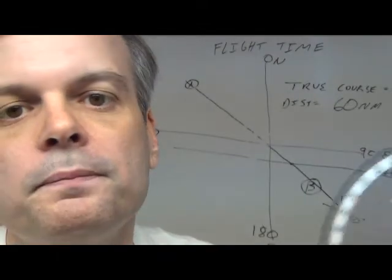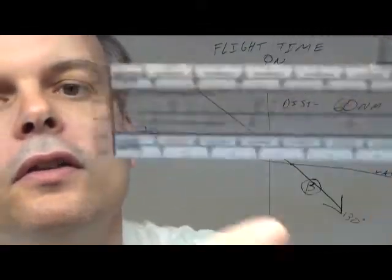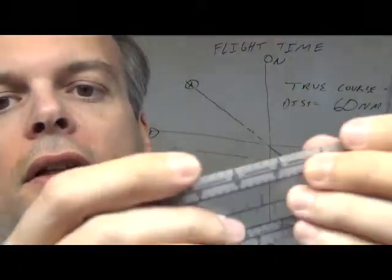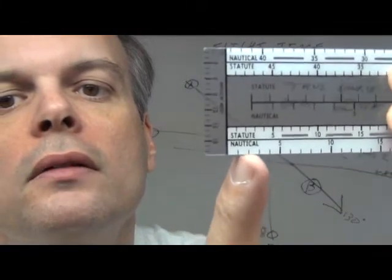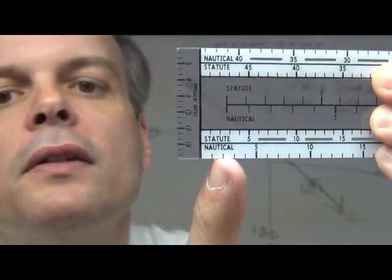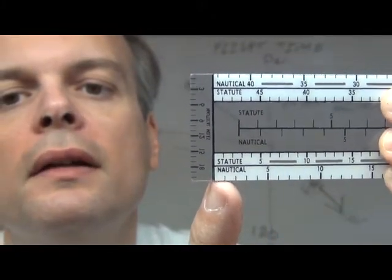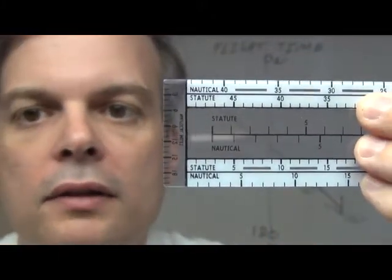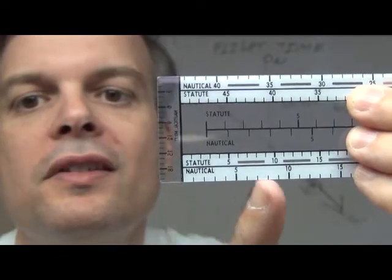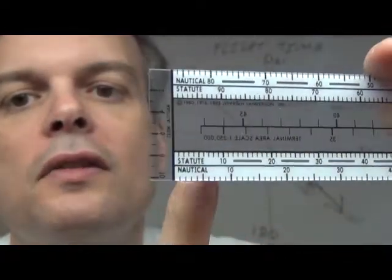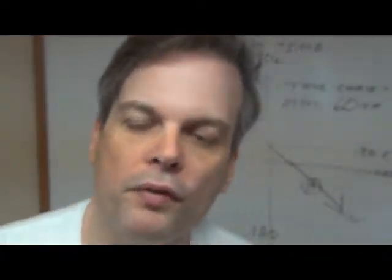So what I learned is you ignore the smaller scale. You want to use the nautical mile that has the bigger scale, that has more spaces between them, the less busy one. When you're measuring nautical miles on your charts, you use this scale. Do not use this scale, even though they both say nautical.